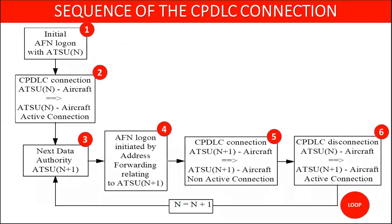The life sequence of a CPDLC connection according to the flight phases is normally as follows. Every CPDLC connection starts with an initial logon to an ATS facilities notification. After successful logon, the air traffic service unit holding the active connection with the aircraft is known as the data authority. When the aircraft is flying, it transits between various flight information regions or control areas. Prior to entering a control area, the aircraft should have a connection with that ATS unit, which is called the next data authority. Once logged into the next unit, this connection becomes active and the previous connection terminates. This process keeps repeating until the aircraft reaches the destination.